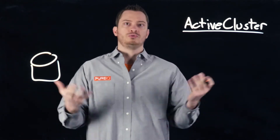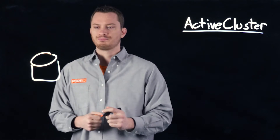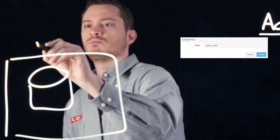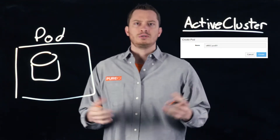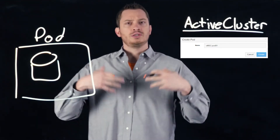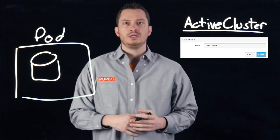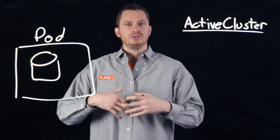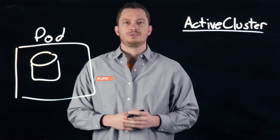ActiveCluster allows you to have this datastore on multiple arrays at once. What you do is take your volume and create what's called a pod. A pod is just an object — essentially a consistency group for replication — and you can put one or more volumes inside of a pod. When you create a pod, it only exists on one array, the array where this volume happens to be.